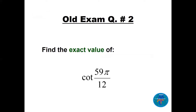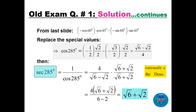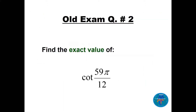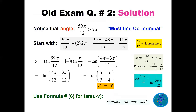Question number two: find the exact value of cotangent of 59π/12. This uses the same idea as question one but is a little harder. Since 59π/12 is greater than 2π, we need to find a coterminal angle first.